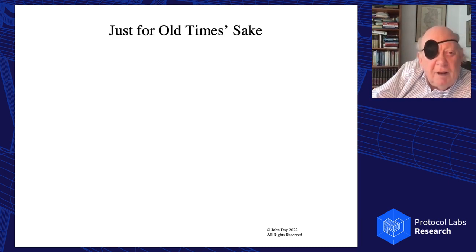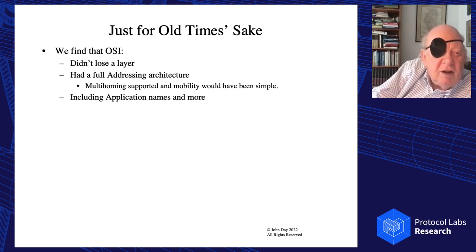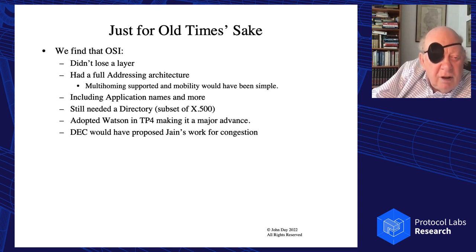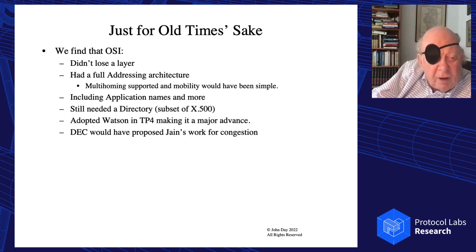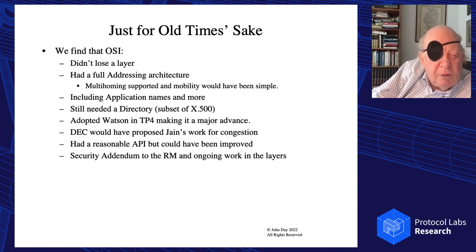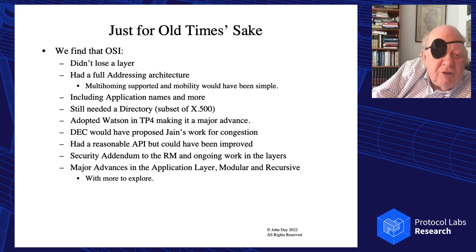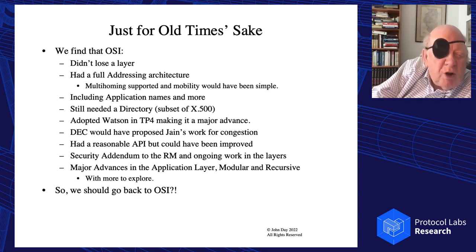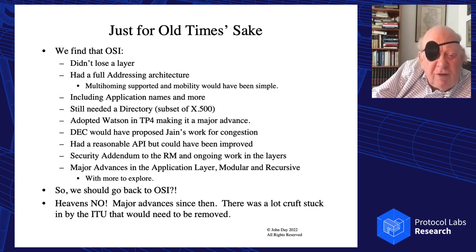Just for old times' sake: OSI didn't lose a layer, had a full addressing architecture including application names and more, still needed a directory — X.500 was not the answer — adopted Watson's work in TP4 making it a major advance over TCP, had a reasonable approach to congestion control via DEC using Jain's work, had a reasonable API that could have been improved, had security work ongoing, and had major advances in the application layer with a modular and recursive structure. So do we go back to OSI? Heavens no — major advances since then, and a lot of cruft stuck in OSI by the ITU that would all have to be removed.